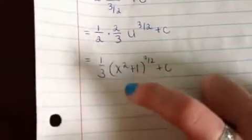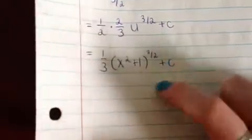So there's our final answer. 1 third times x squared plus 1 to the 3 halves plus c.